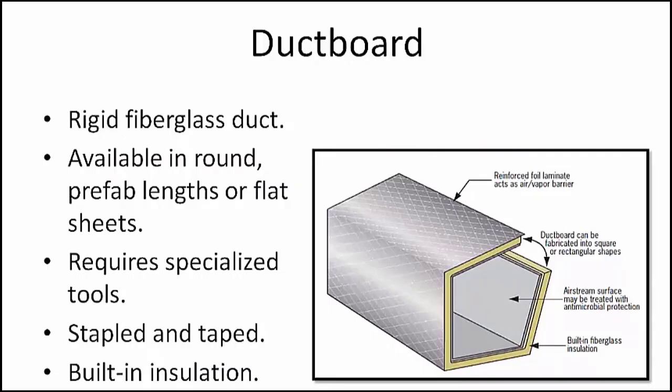Duct board is rigid fiberglass duct and is available either in round or prefabricated lengths or in flat sheets. Constructing and installing a duct board system requires specialized tools for creating the overlapping joints. When two pieces of duct board are joined, they are stapled with a special stapler and taped. The duct board in its design offers built-in insulation and is light and easy to transport.